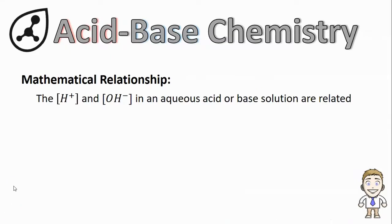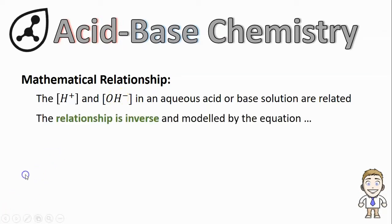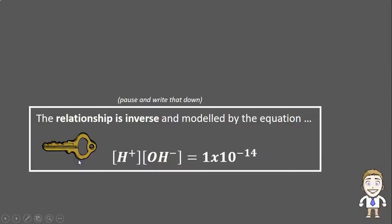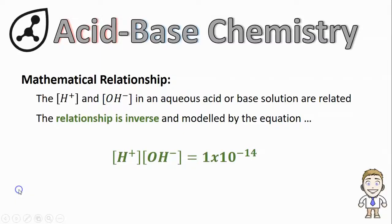So in this video, we'll look at the mathematical relationship that exists between the concentration of H+ and the concentration of OH- in any aqueous acid or base solution. As it turns out, the relationship between these two concentrations is inverse and modeled by an equation. The equation tells us that the H+ concentration times the OH- concentration always has to equal this very small number 1×10^-14. This equation will hold true for any typical acid or base solution and it's also one of our key ideas for this video. So make sure you pause and take a minute to write it down.